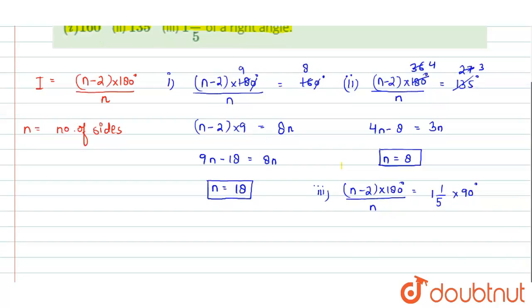So for the simplifying this, we will get (n minus 2) into 180 degrees divided by n equals to now 1 whole 1 by 5. This will be equal to 6 by 5 into 90 degree. Now just cancel this 180 degree by this 90 degree, we will get 2 here and we can cancel this 6 by this 2. So this will be 3 here.